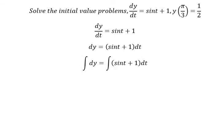The integral of dy gives y. The integral of (sint + 1)dt gives negative cosine t plus t, and then we add C, the constant.